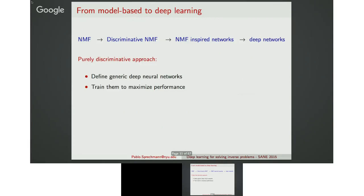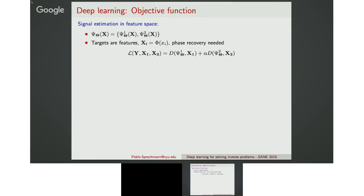In the deep learning approach, this is purely discriminative — we just need to define a deep generic architecture and train it to maximize performance. We need to set three ingredients: objective functions, architectures, and which input features we are going to use. I will now do a review of what has been done in the literature for training deep networks to solve this particular inverse problem.